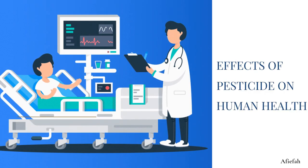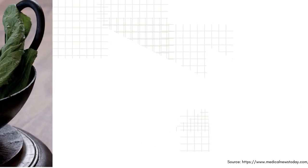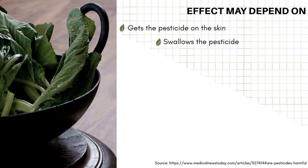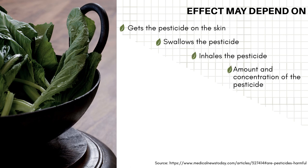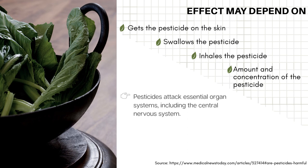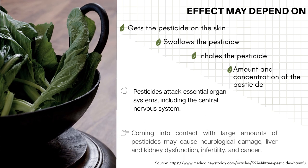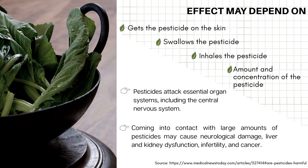Now, the effects of pesticides on human health. These effects may depend on whether the pesticide contacts the skin, is swallowed, or is inhaled. The amount and concentration of the pesticide may also affect outcomes. Pesticides can attack essential organ systems, including the central nervous system. Contact with large amounts of pesticide may cause neurological damage, liver and kidney dysfunction, infertility, and cancer.